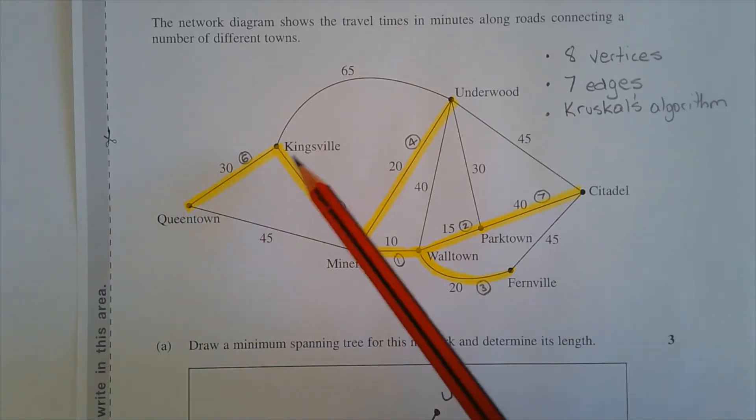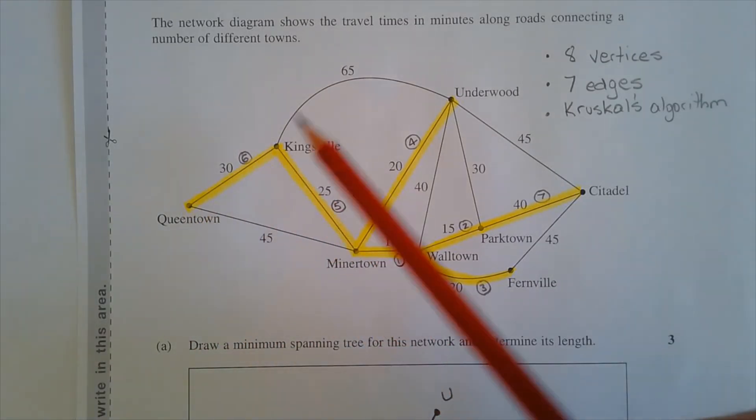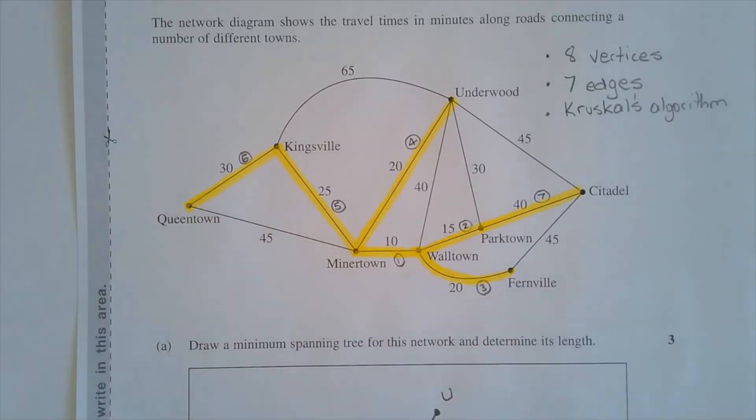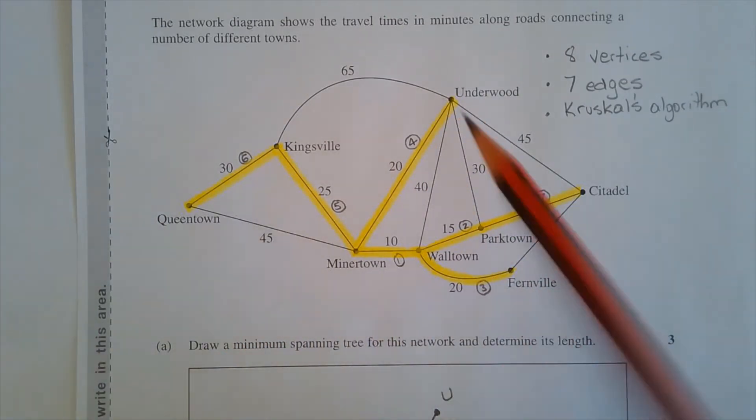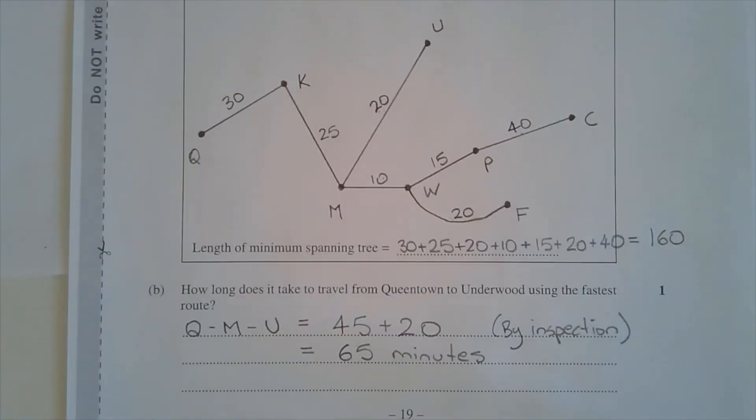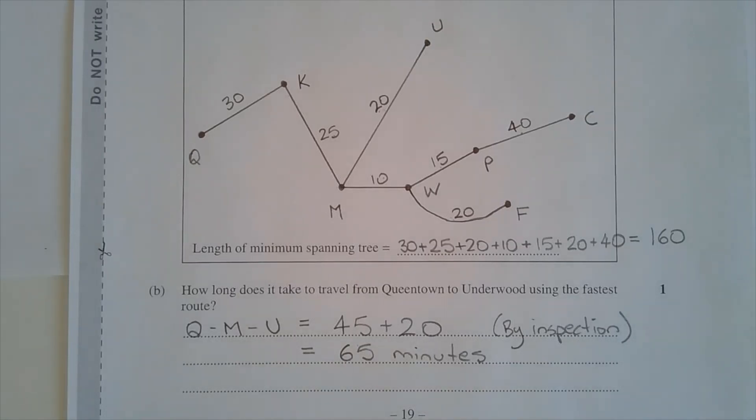So we can either go via Kingsville, so Queen Town, Kingsville, Underwood, that's 30 plus 65, is 95 minutes. And there are other ways as well to go from Queen Town to Underwood. So by inspection, Queen Town to Minertown to Underwood is 65 minutes, so 45 plus 20. And that gives the fastest route. So Queen Town to Minertown to Underwood, 45 plus 20 is equal to 65 minutes.